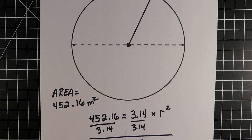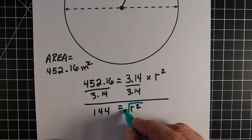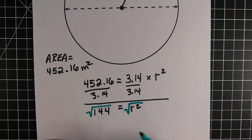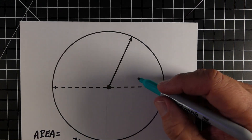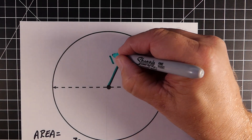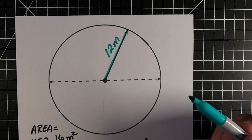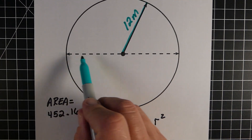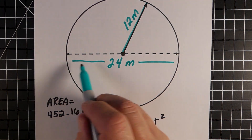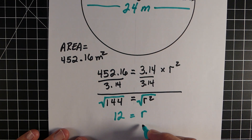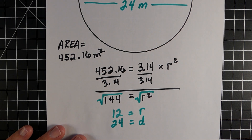Like the last example, 144 is not our answer — we need the radius, not the radius squared. So we find the square root of radius squared and the square root of 144. The square root of r squared is just r, and the square root of 144 is 12. So the radius is 12 meters. The diameter is the distance all the way across, so we multiply 12 by 2 to get 24 meters.